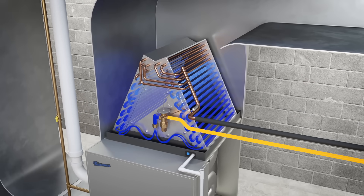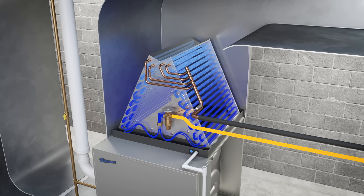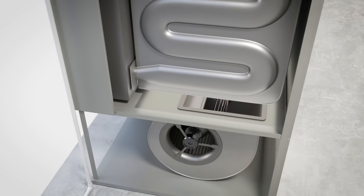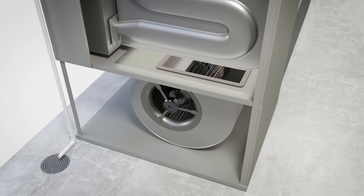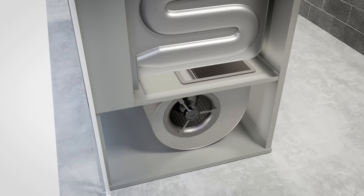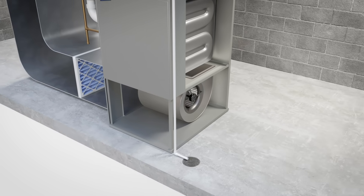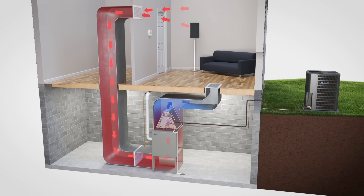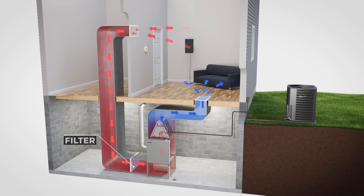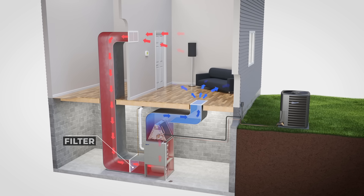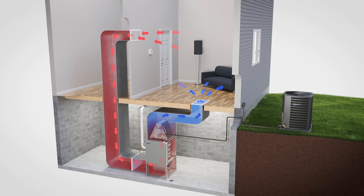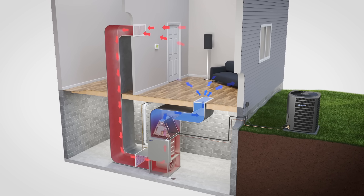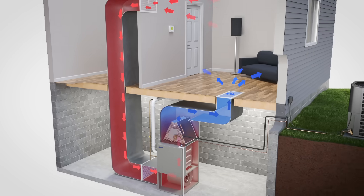The lower pressure allows room temperature air to boil the refrigerant. The chilled refrigerant then flows through the evaporator coil. The blower begins circulating air throughout the house — room temperature air is pulled in through the return duct and passes through the filter to remove particulates.